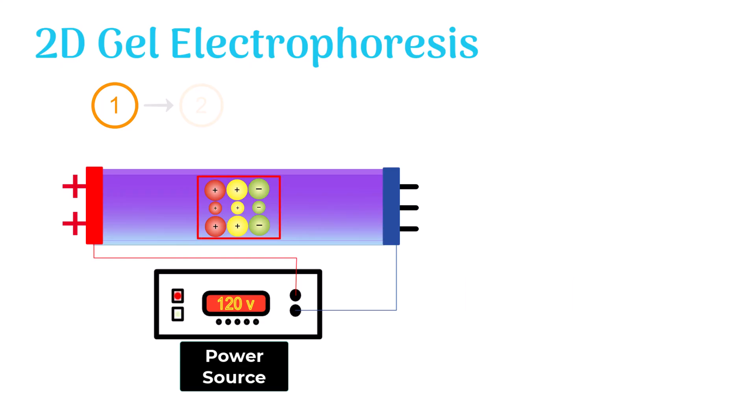Now we place proteins on the gel and apply the electric field. Some proteins are positively charged while some of them are negative. The protein molecules start moving towards the oppositely charged end of the gel.